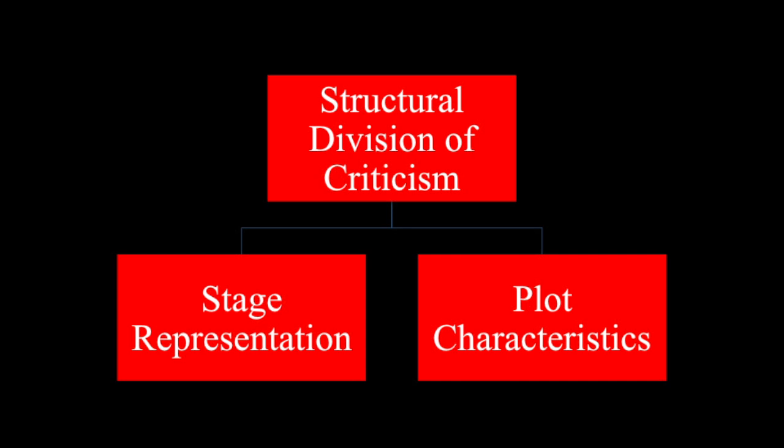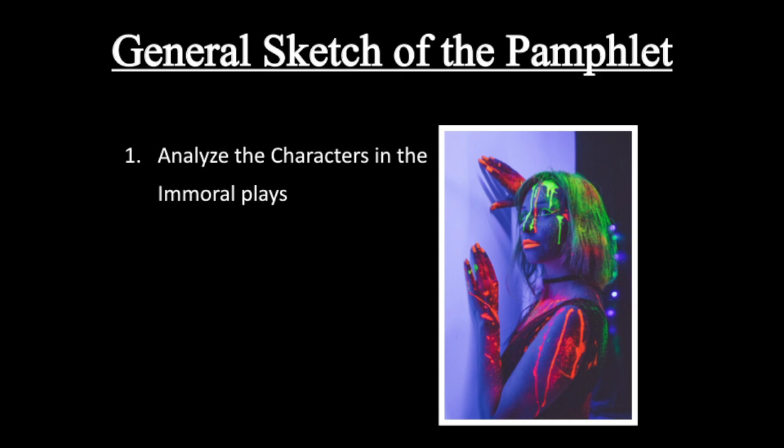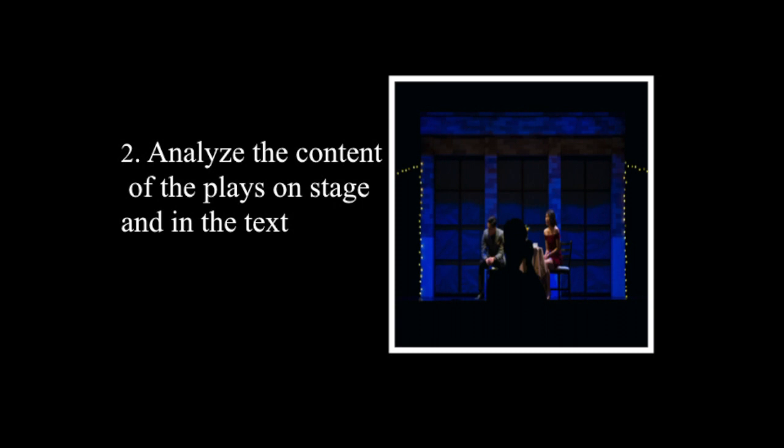This is the most important thing. In the general sketch, you'll be analyzing the characters in these immoral plays — how they are being represented and what is wrong with them. There must be some characteristic trait. Collier is going to address these characteristic traits that he notices in the works he criticizes. He will also analyze the content on stage and in the text, telling you the main aspects that he sees as structurally wrong.